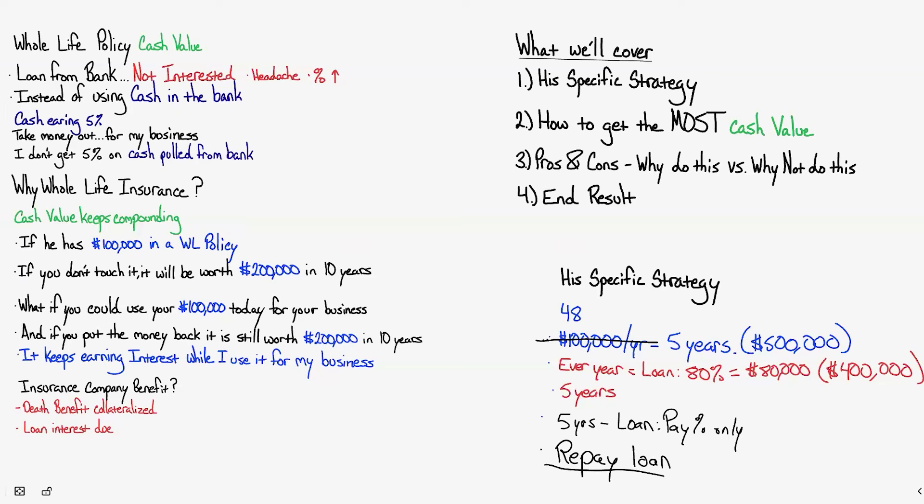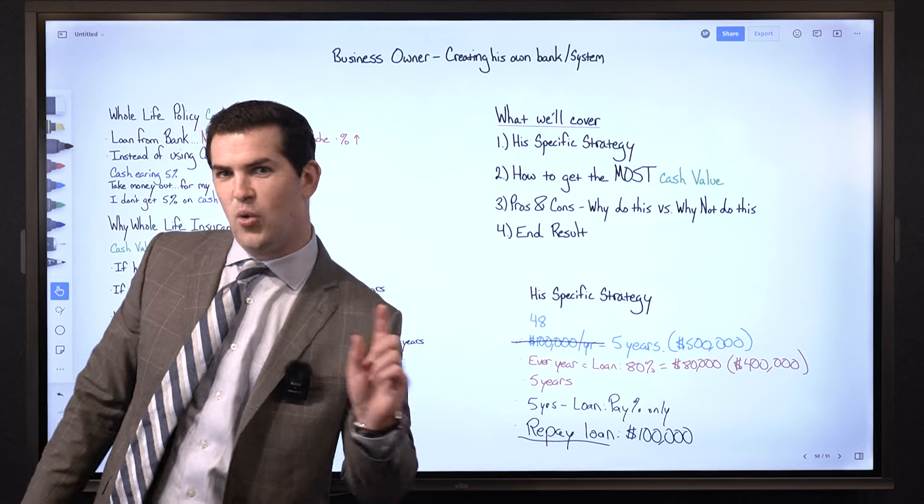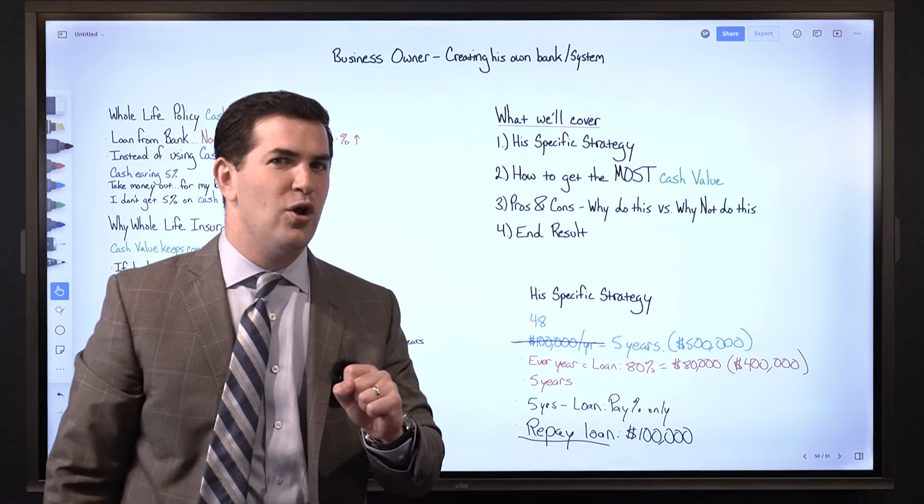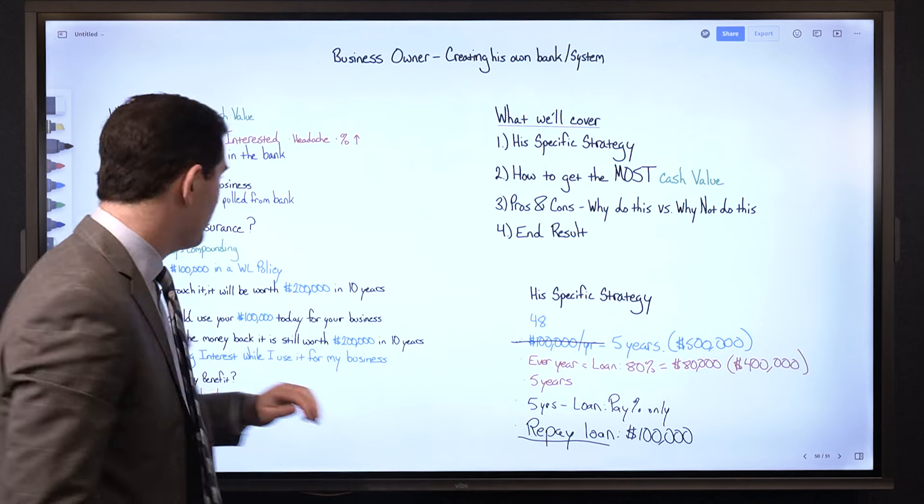What we're going to look at is $100,000 per year. This way you can see, one, just redirecting the cash flow now toward the loan. You can also see what your policy values look like once the loan is paid back, but this is his specific strategy.